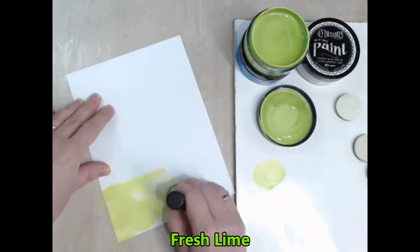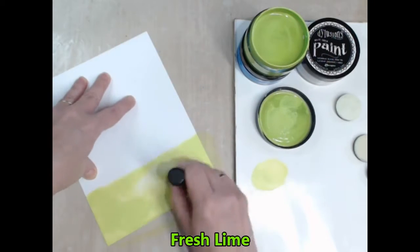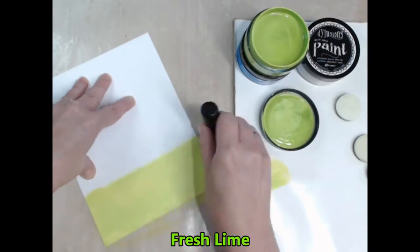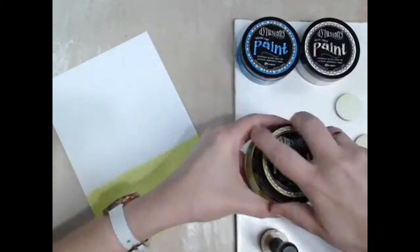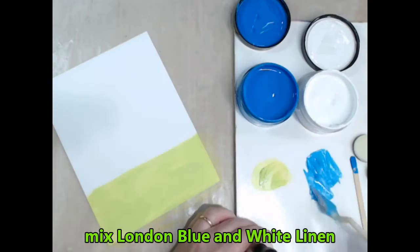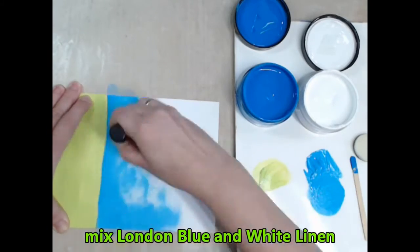Today for the background I'm using the Delusions paint and I'm applying that with the mini ink blending tool. It just makes the job so much quicker, applies it very smoothly and it's a really quick clean up.